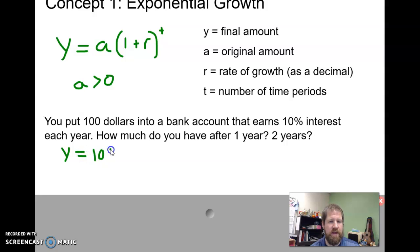So if we fill that in, just to make sure that our formula works, we have 0.1 for our interest rate, our rate of growth, and then the time period is going to be one year. So we have 100 times 1 plus 0.1, or 1.1, 100 times 1.1 gives me 110. So our formula works, makes sense.